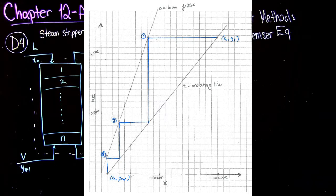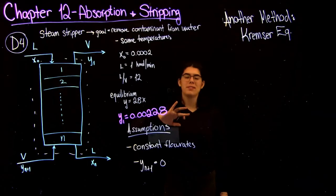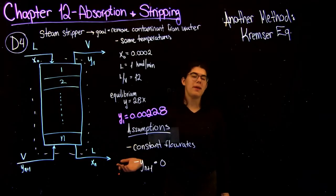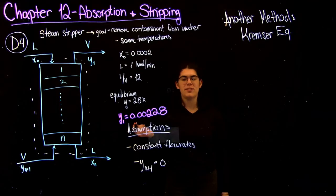So as you saw from the graph I just showed, you're able to get three stages graphically using the McCabe-Thiel method. Keep in mind, sometimes your equilibrium line might be below your operating line for a slightly different system, but you're still going to be able to do the same thing as you usually do, just counting off stages so you reach your desired composition.